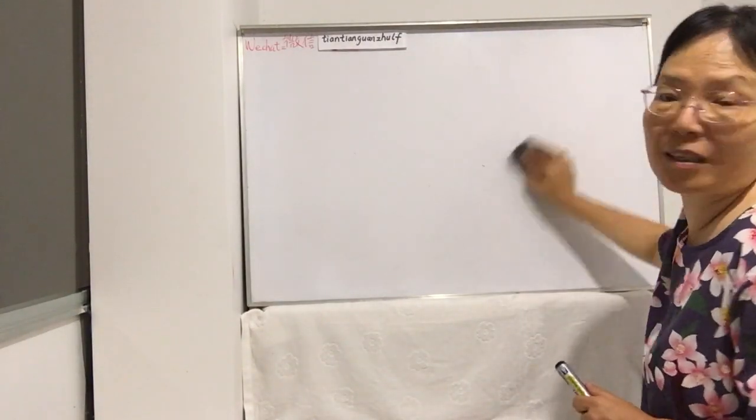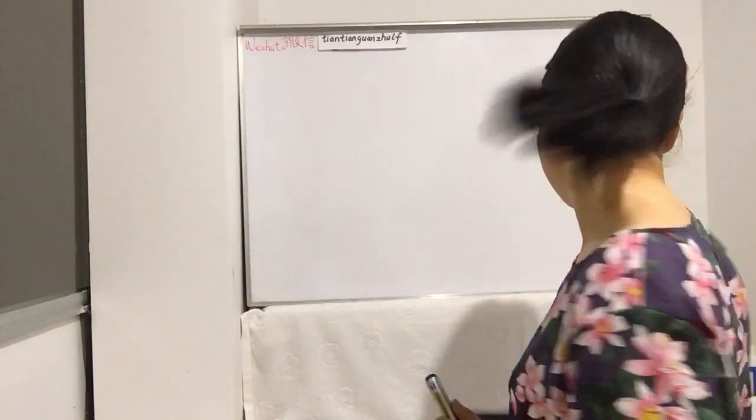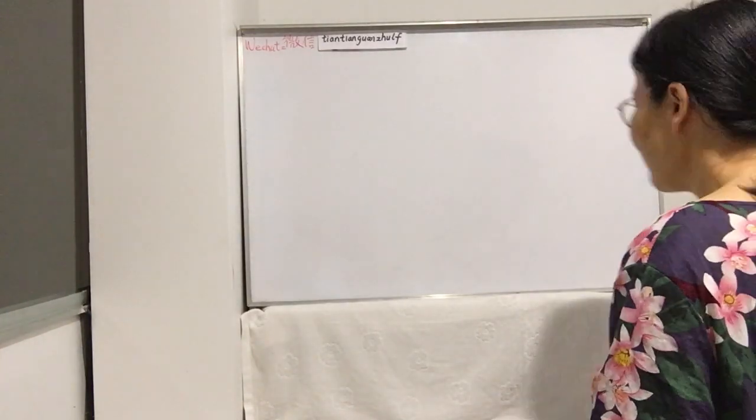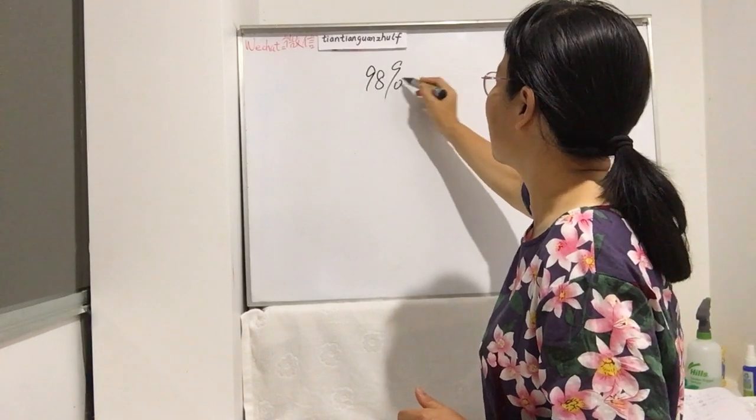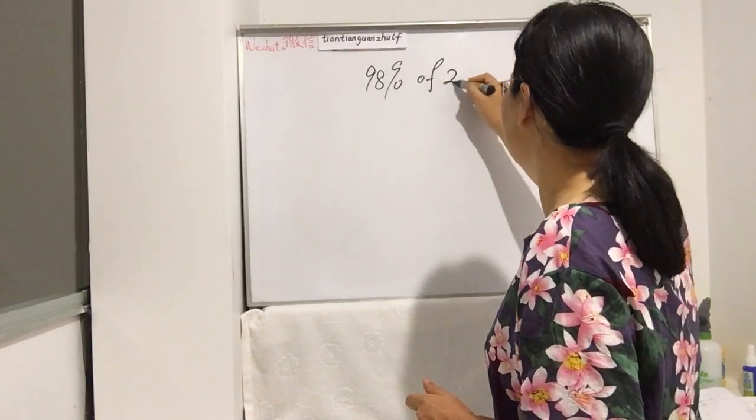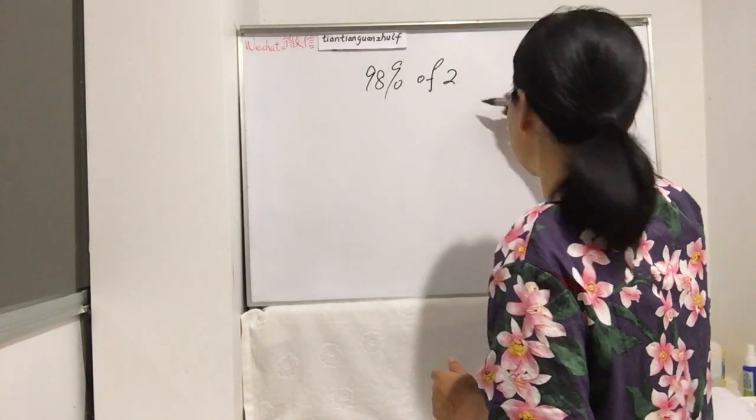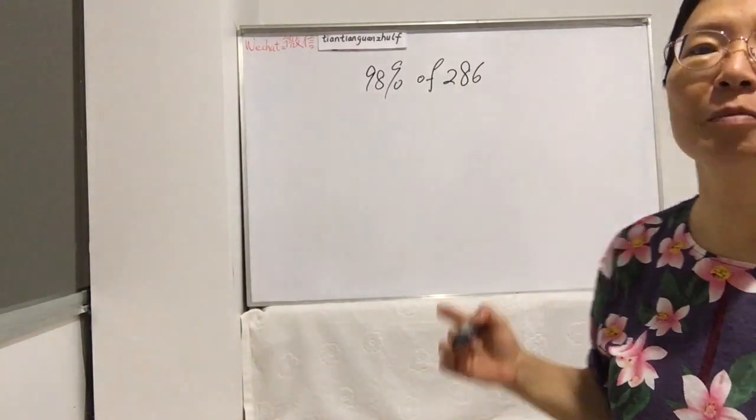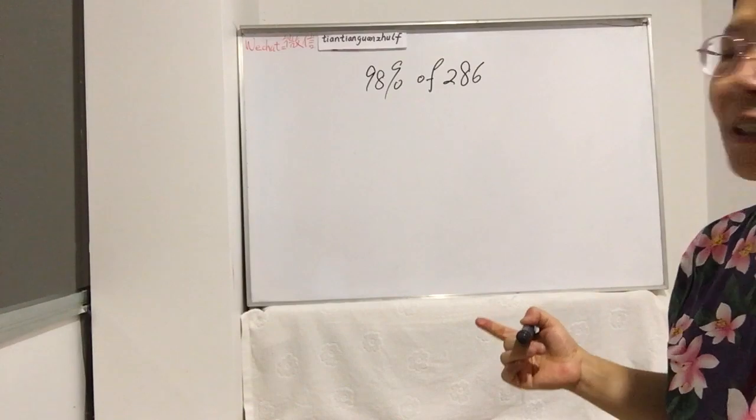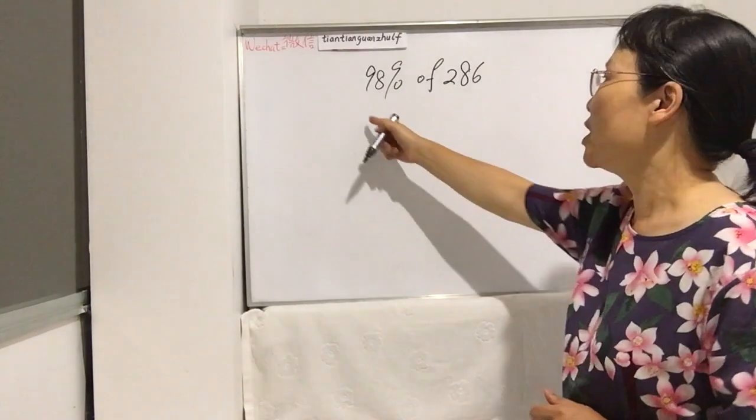Now let's make another example to master the skill. You always need to practice more. As we said, practice makes you perfect. 98% of 286, let's see how we work out this. It's a little bit harder but we can work it out—it's not that difficult.